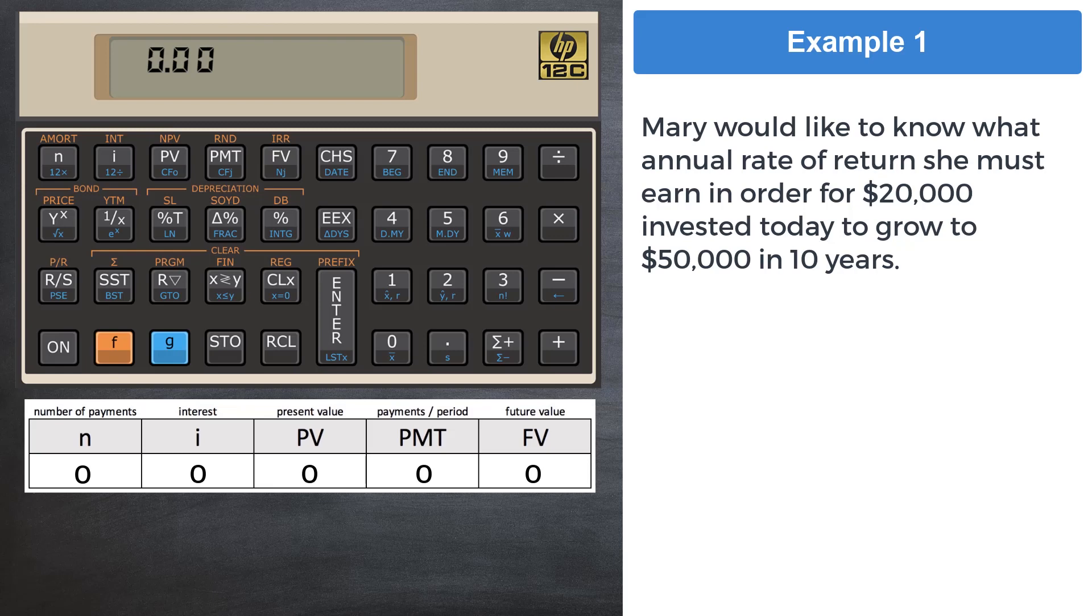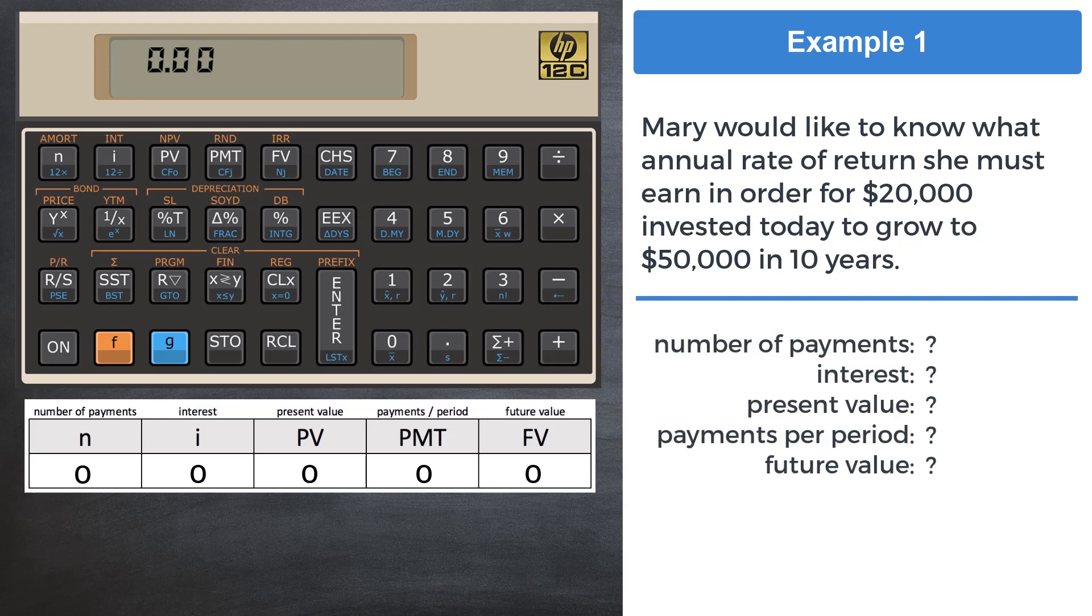Example 1: Mary would like to know what annual rate of return she must earn in order for $20,000 invested today to grow to $50,000 in 10 years. First, let's identify the values of the variables. We are given these four.